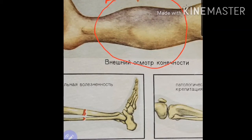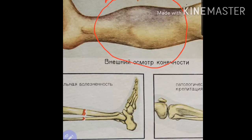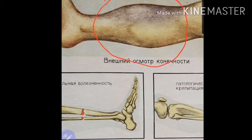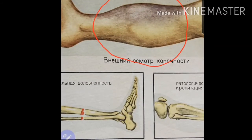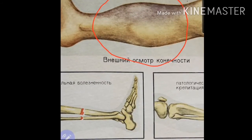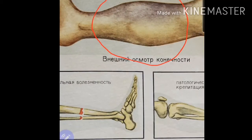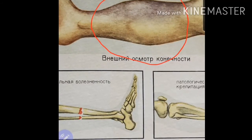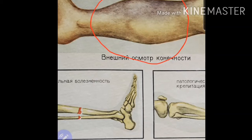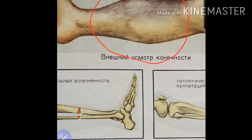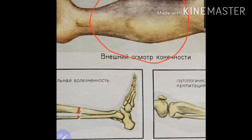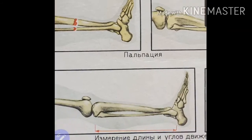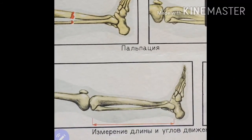If you check this area you will see a gross deformity. You will see crepitation and pathological mobility. In this case you are sure that the fracture is present. So let's start from the deformity.